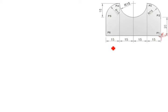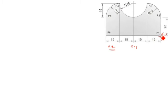Already we seen in the last video what is Z90 and what is Z91. Z90 is absolute program. Z91 is incremental program. Z90 means all dimensions are taken from the datum. Z91 means all dimensions are taken from the tool position, not the datum. Datum means this is the datum. Tool position means this is the tool position. You have to refer the previous video for Z90 and Z91.